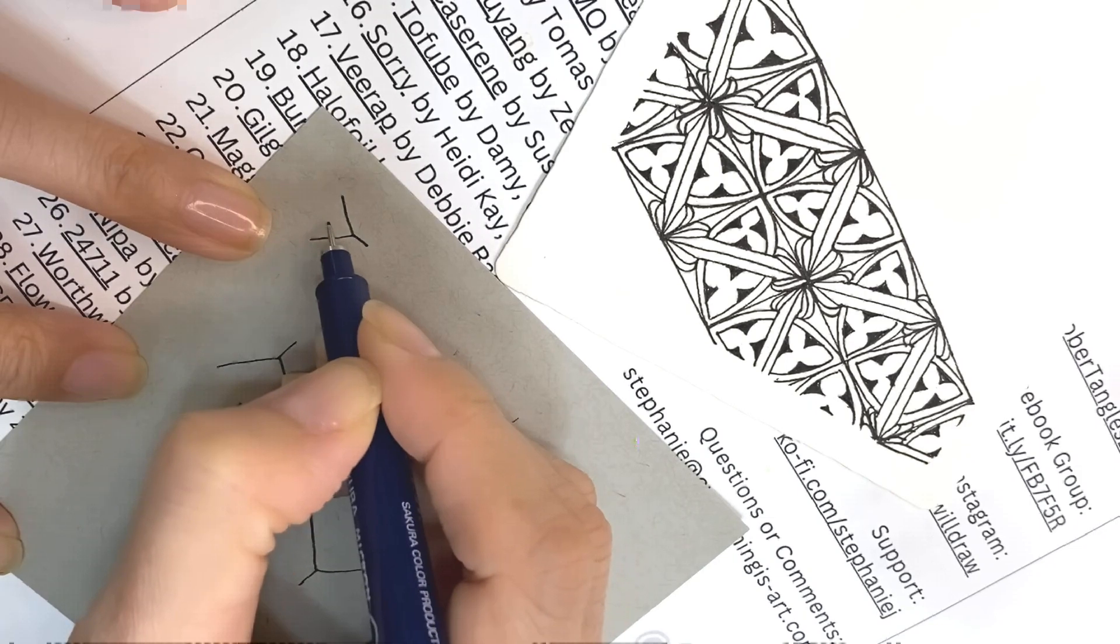To create zigzag line, so this one's gonna be like this, I think, and then next one, it's gonna be, I don't know how much space I want in between, maybe about this much. You gotta be taking too much space.